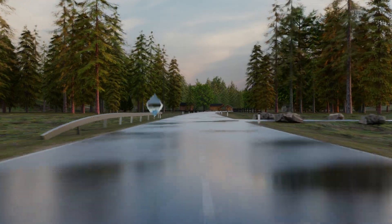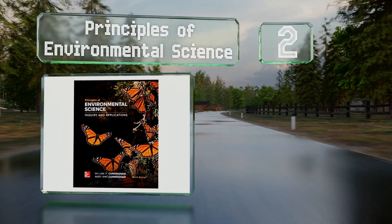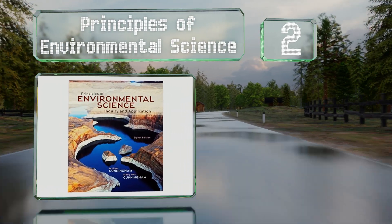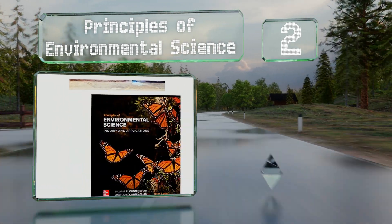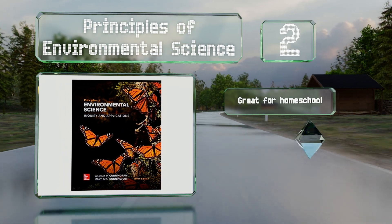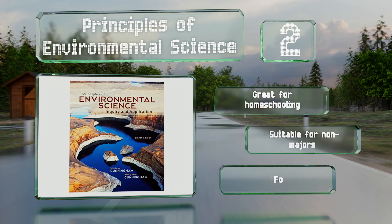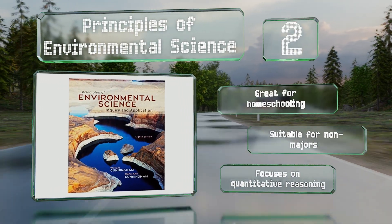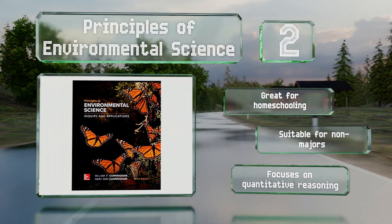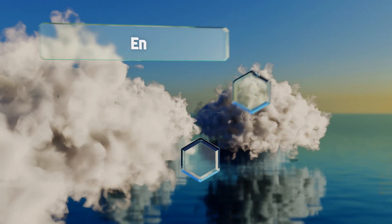At number 2, the authors behind the concise and accessible 'Principles of Environmental Science' opted to keep things short at just 16 chapters, making it an ideal text for one-semester courses. It uses myriad learning aids to get students to think critically for themselves, it's great for homeschooling, suitable for non-majors, and focuses on quantitative reasoning.